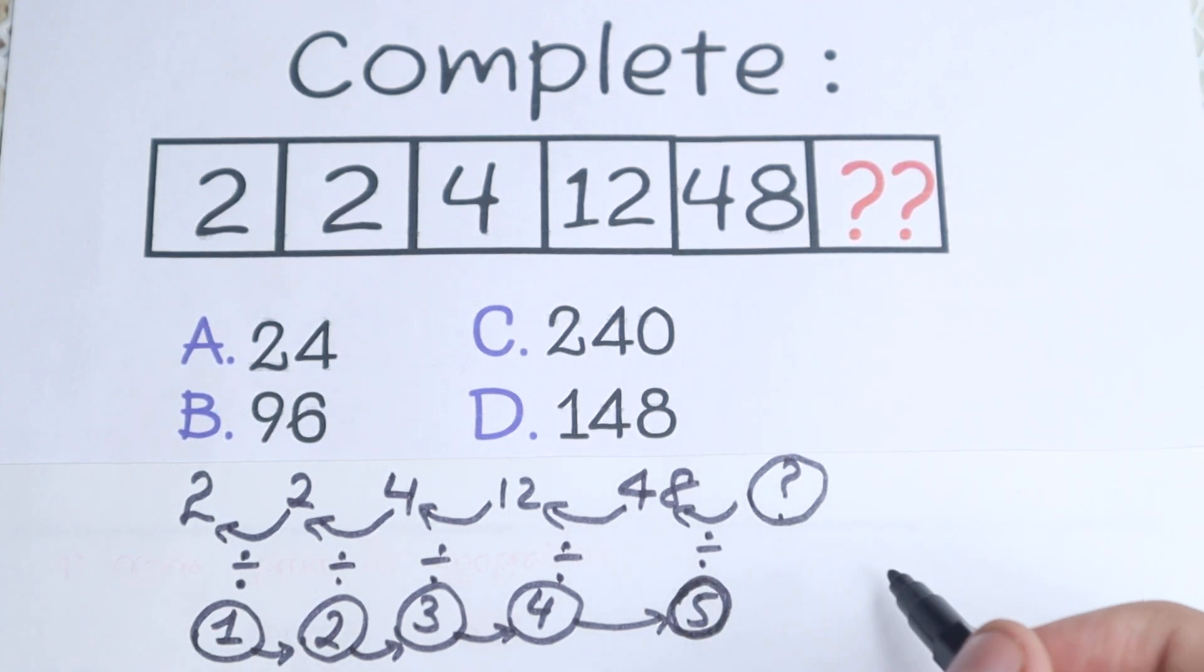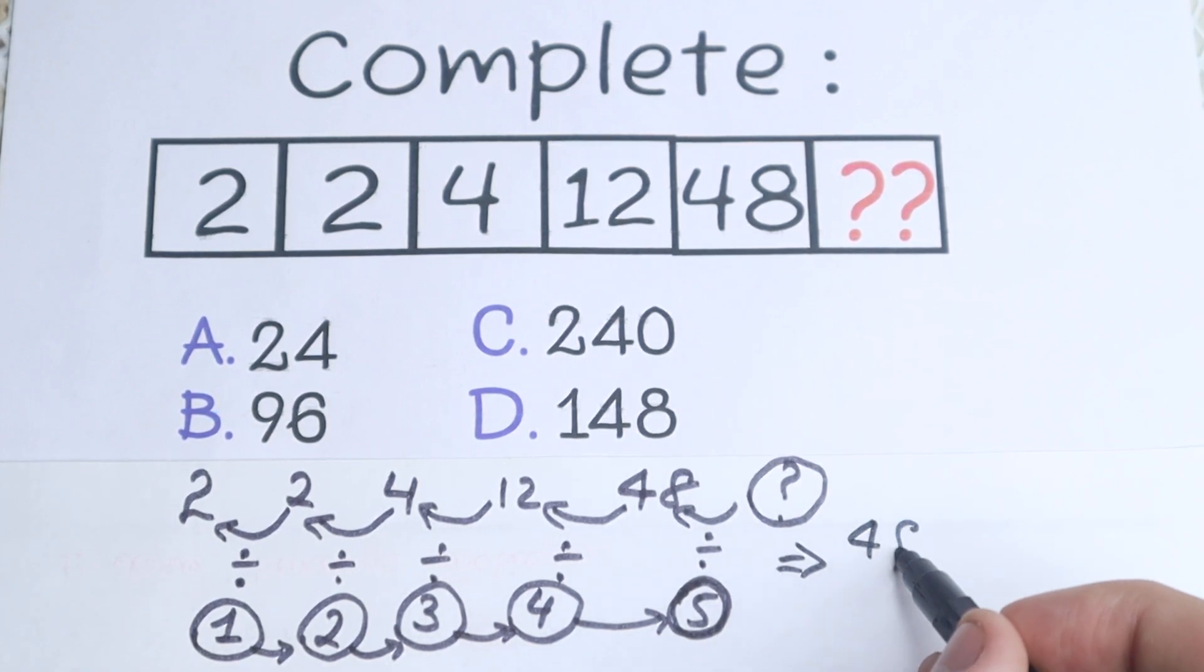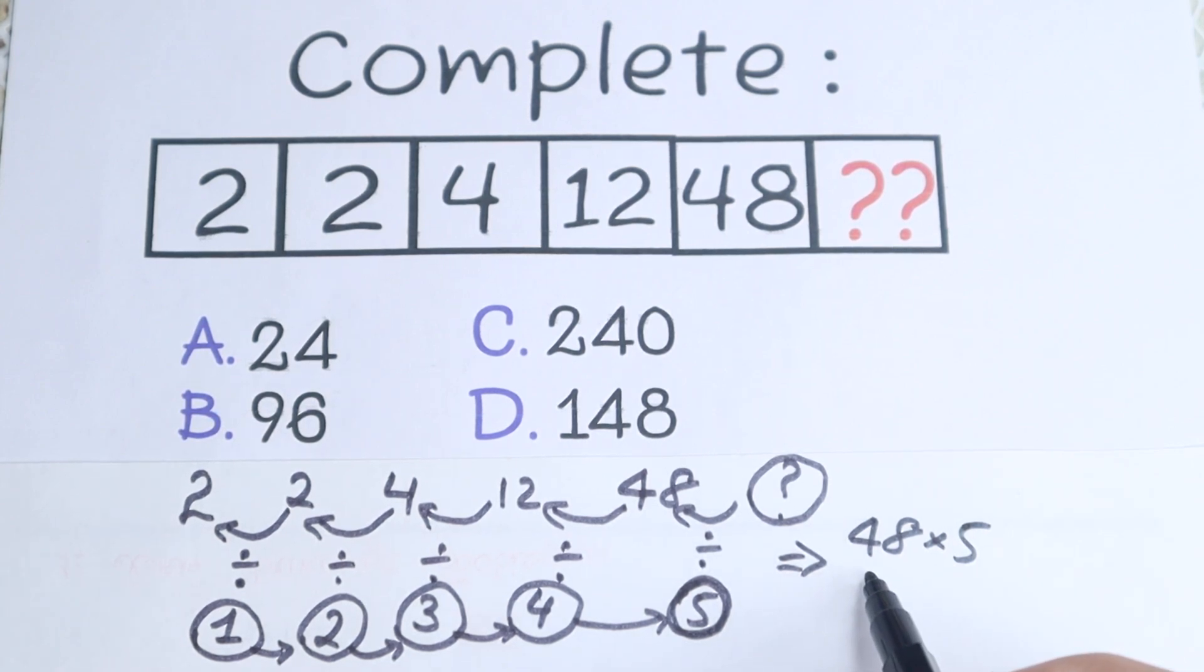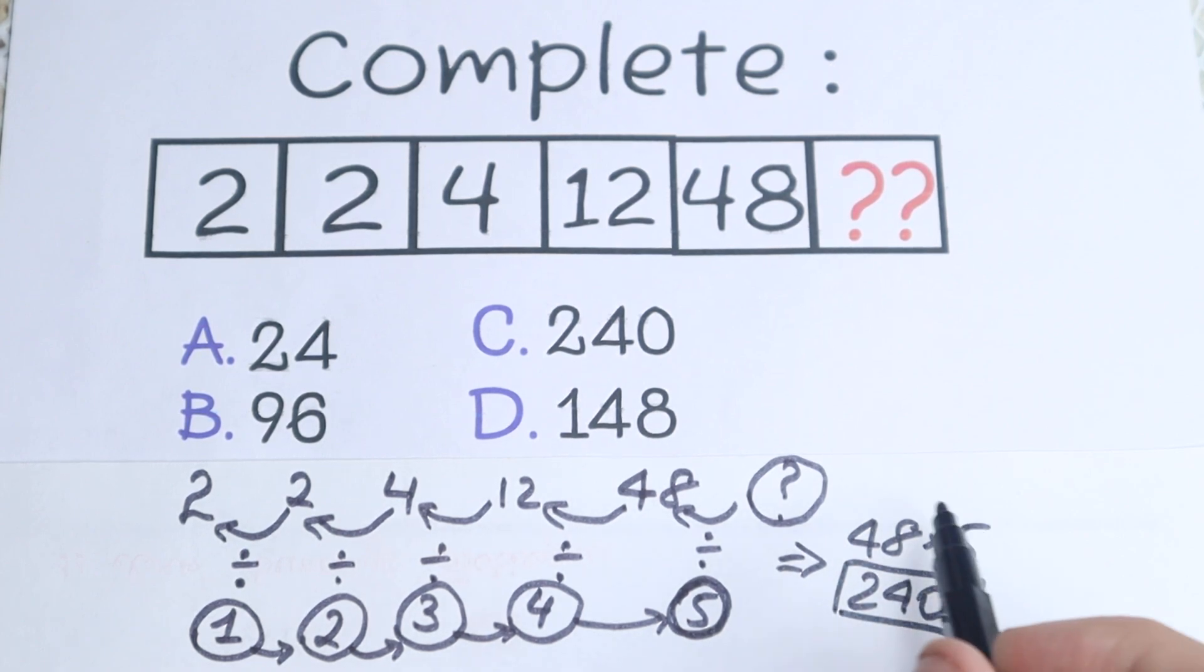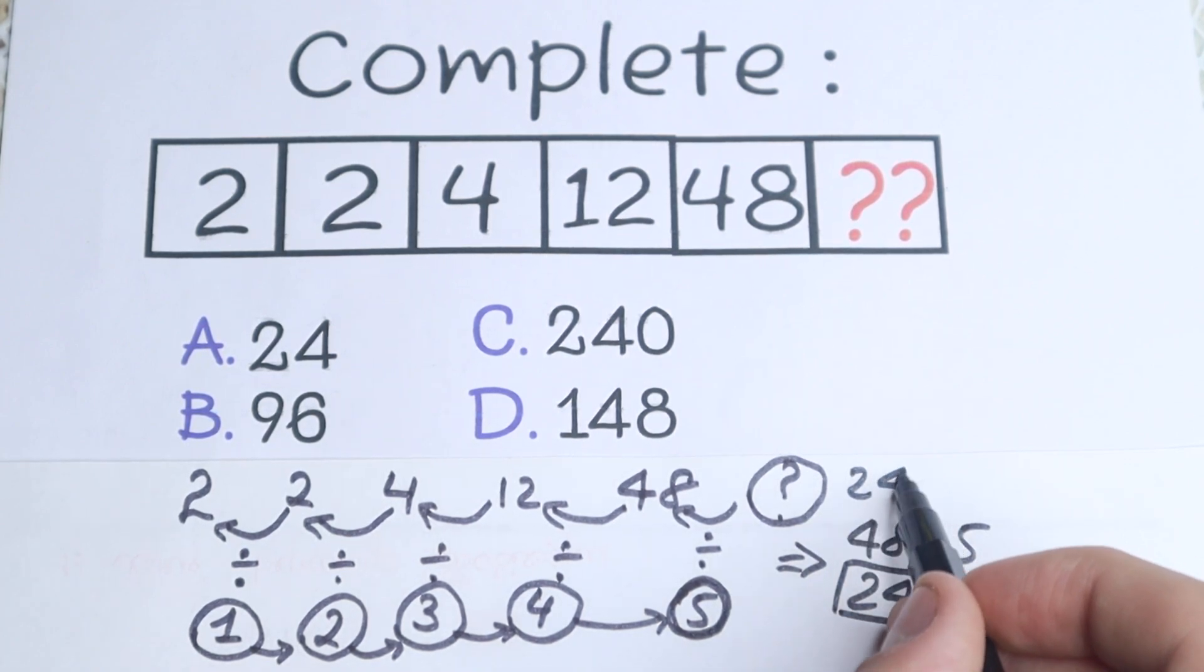So as you can see, this is like a triangle. And from here, if we multiply 48 by 5, we will have 240. This is our answer to this problem. So this is our 240.